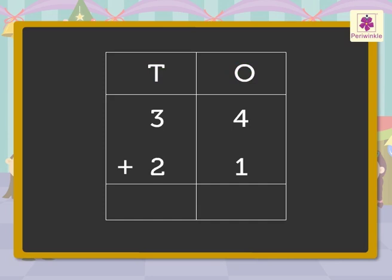First, we add the numbers in the ones column, 4 and 1. We get the number 5. Write it also in the ones column. Now, add the numbers in the tens column, 3 and 2. Again, we get 5, which we write in the tens column.